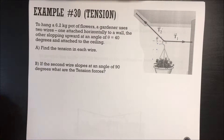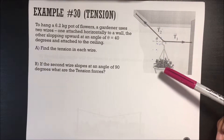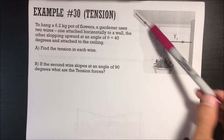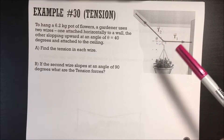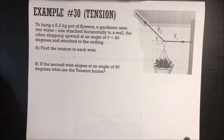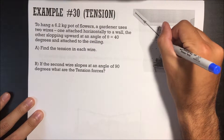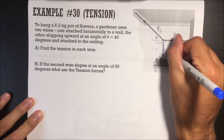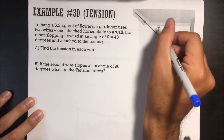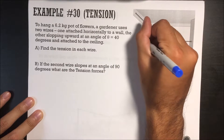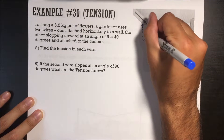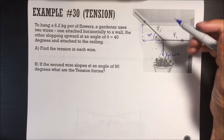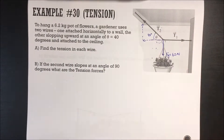Let's look at the next example — this is where it becomes more difficult because it's 2D. To hang a 6.2 kg pot of flowers, a gardener uses two wires: one attached horizontally to a wall, the other sloping at an angle of 40 degrees attached to the ceiling. Find the tension in each wire. Draw the free body diagram. Force of gravity equals 6.2 times 10 equals 62 newtons. We draw the angled wire and its components at 40 degrees. Since the object isn't moving, acceleration in x and y are both zero.